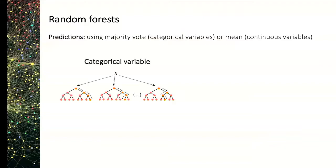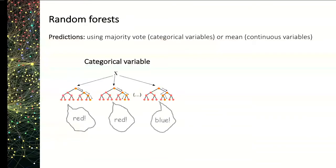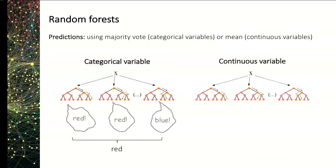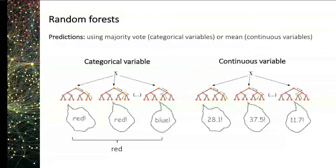For a categorical variable like color, each decision tree gives an answer — for example red, red, blue — and the output of the forest would be red by majority vote. For a continuous variable, each decision tree provides a specific number — for example 28.1, 37.5, or 11.7 — and the prediction for that observation would be the mean of all these values.